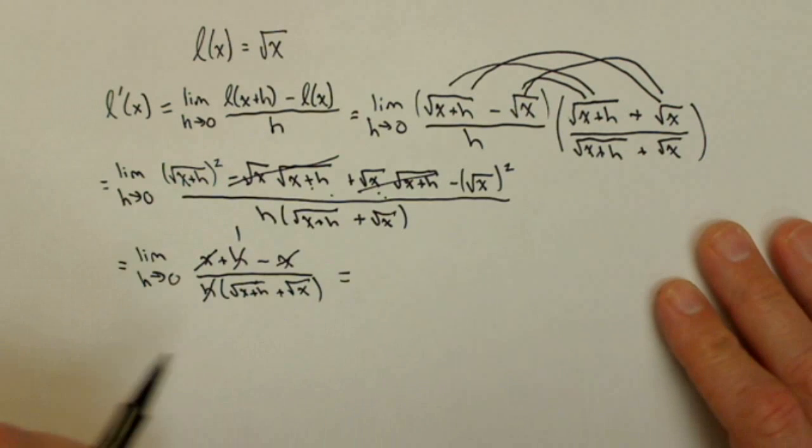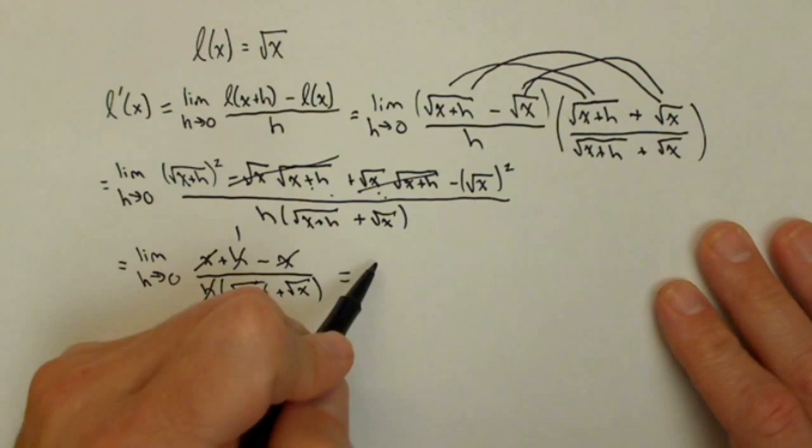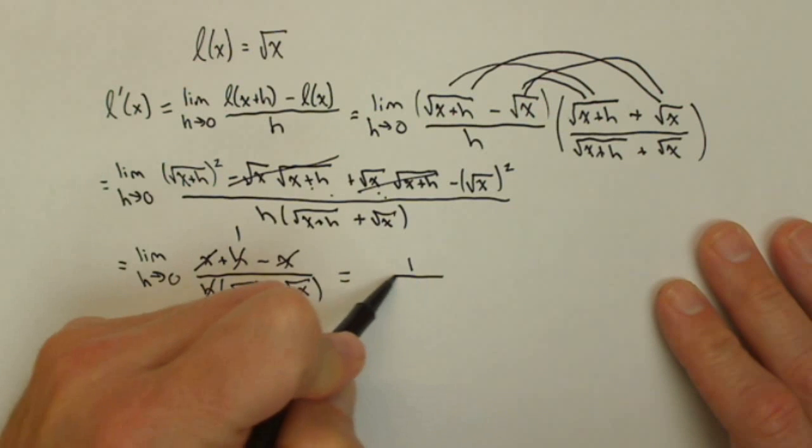I can actually go ahead now and take the limit as h goes to zero. So this term here is going to become zero. So after my limit I'm going to end up with one on top.